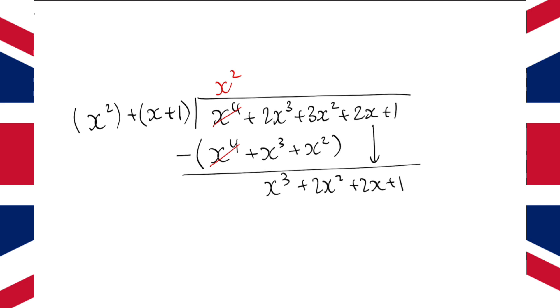And then repeat. We are going to subtract x cubed. We go, what do we times x squared by to get x cubed? Well, that's just x. And then, timesing x by x plus 1, you get x squared plus x. And then, doing that subtraction, that and that cancel, you get x squared plus x plus 1.